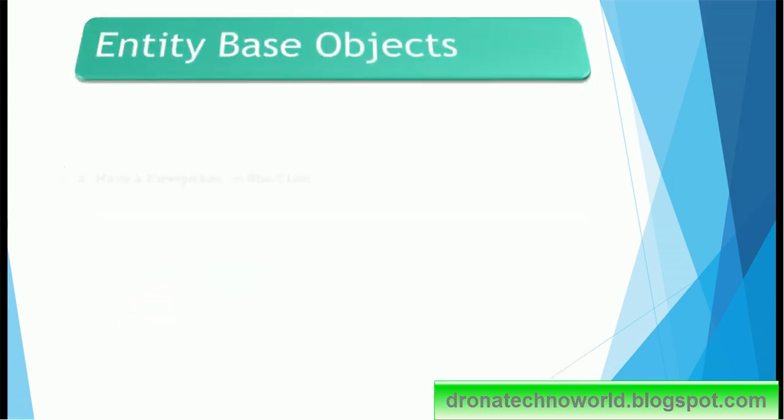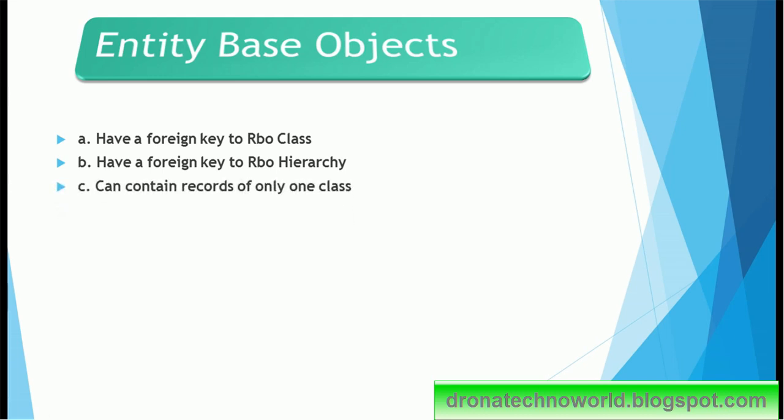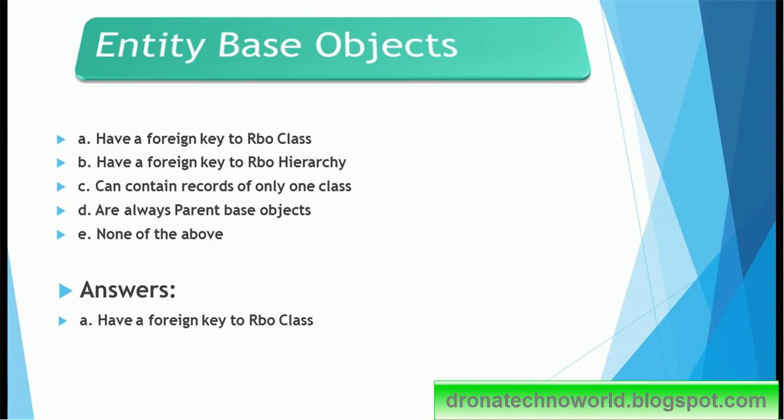Entity based objects: have a foreign key to RBO Class, have a foreign key to RBO Hierarchy, can contain records of only one class, are always parent based objects, or none of the above. And the correct answer is have a foreign key to RBO Class. So this is the relationship between the entity based object and RBO Class. That's the reason RBO Class code column is present in your entity based object. So suppose party is your entity based object, it has to have that RBO Class code. That is the relationship between the RBO Class table and your entity based object, or in other words your party table.